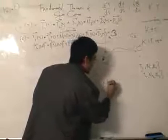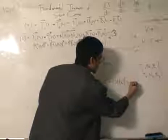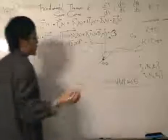U dot with V equals magnitude of U, magnitude of V, and cosine theta. This is the definition of the dot product.